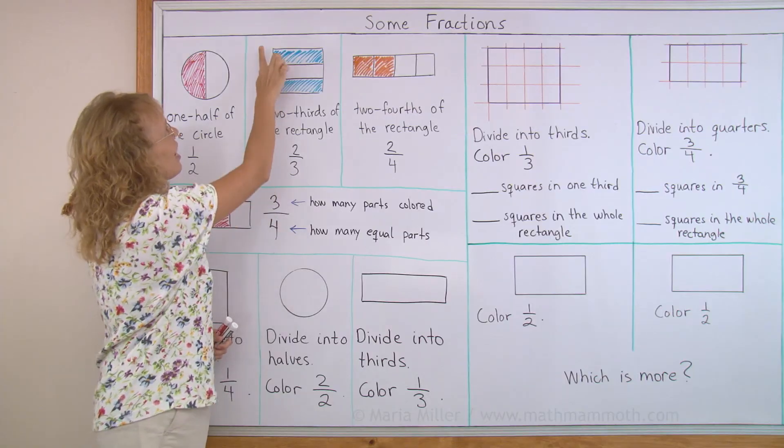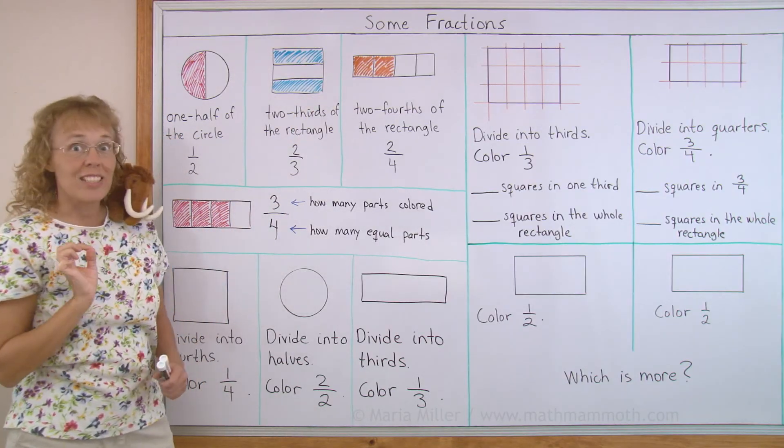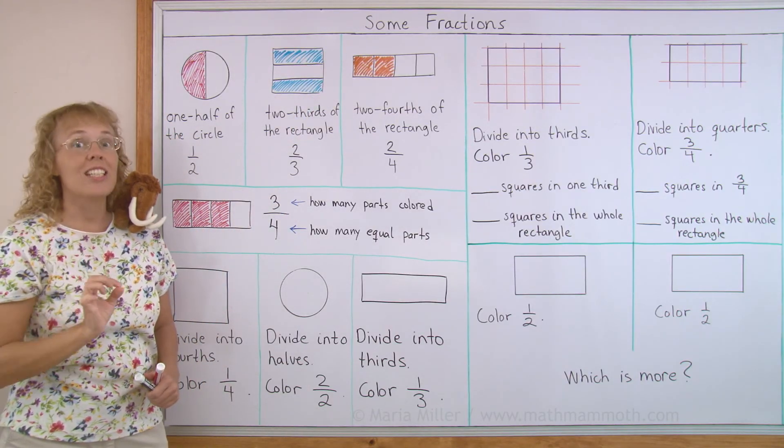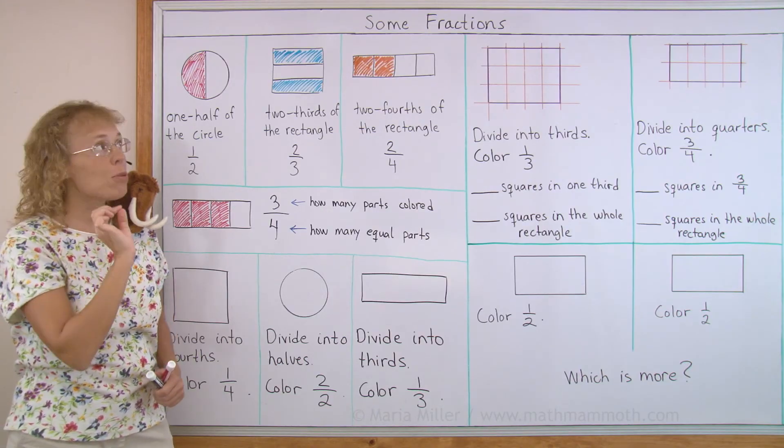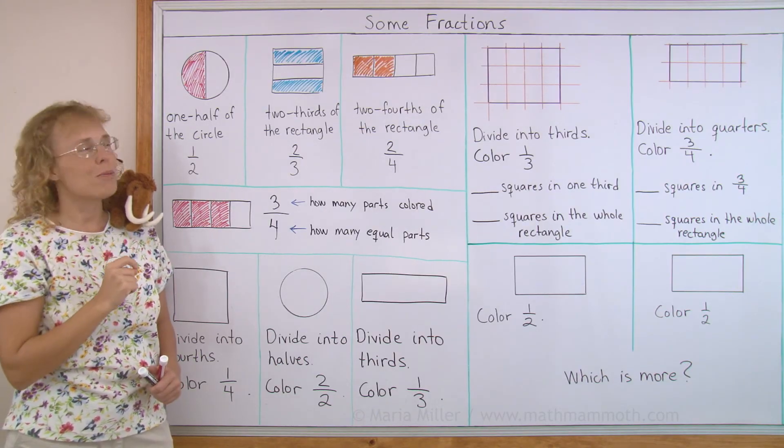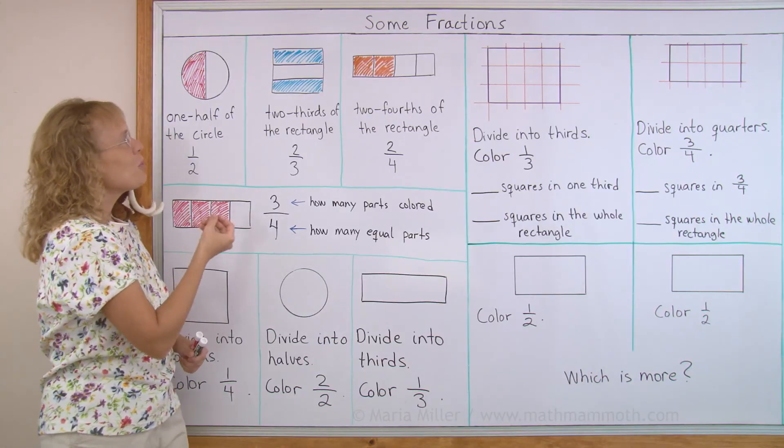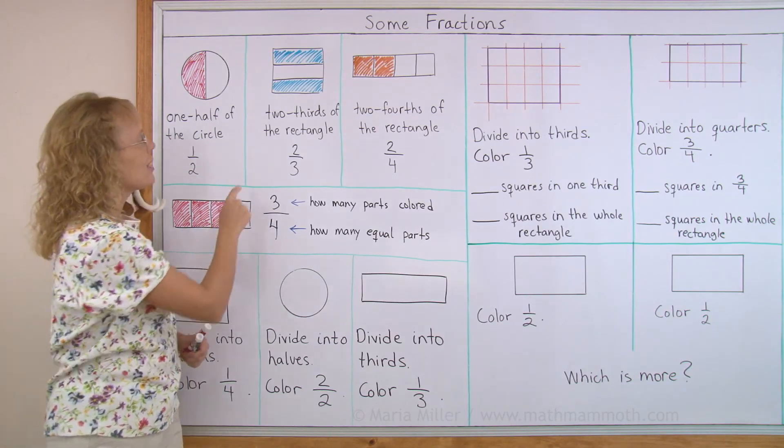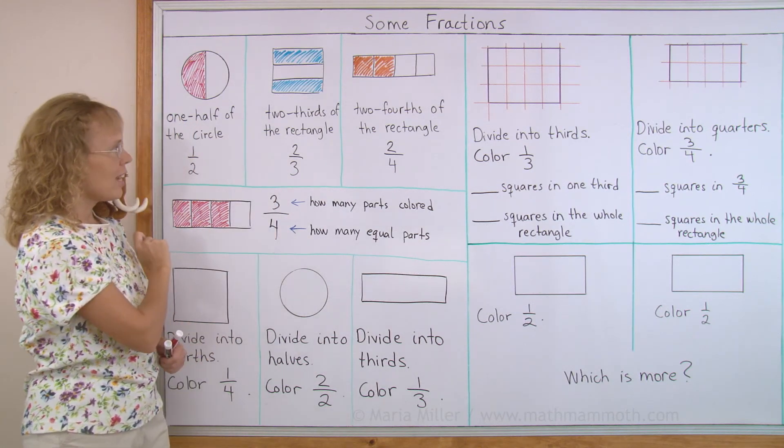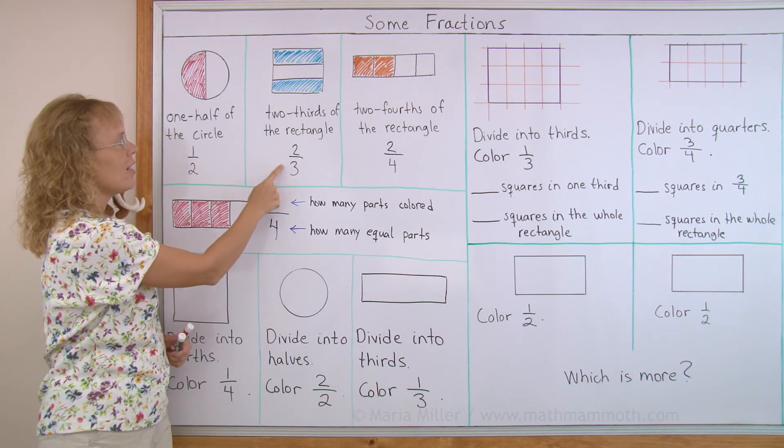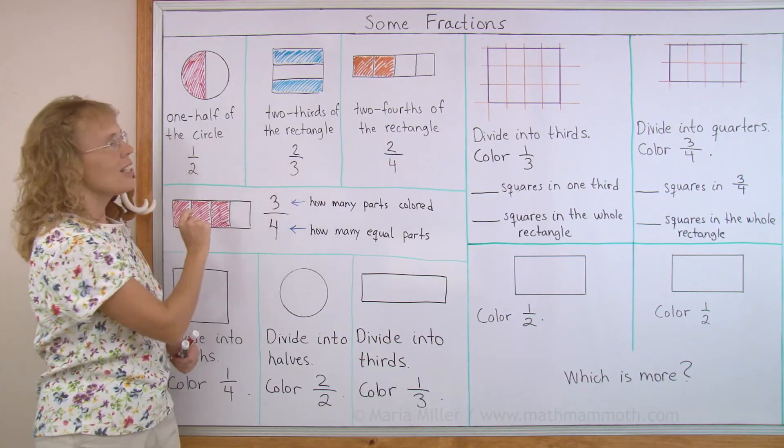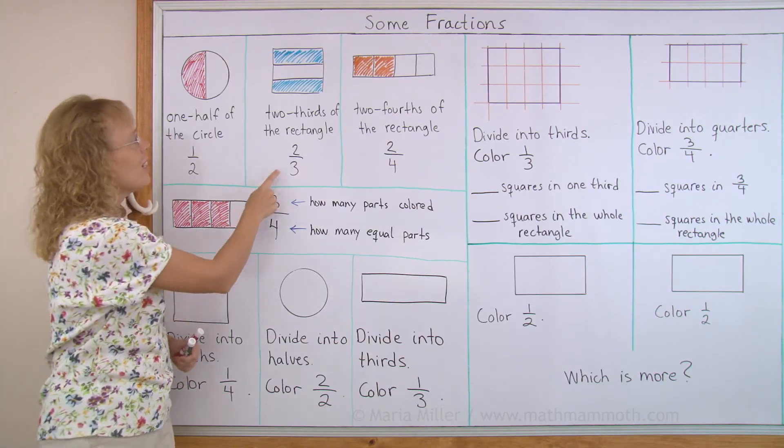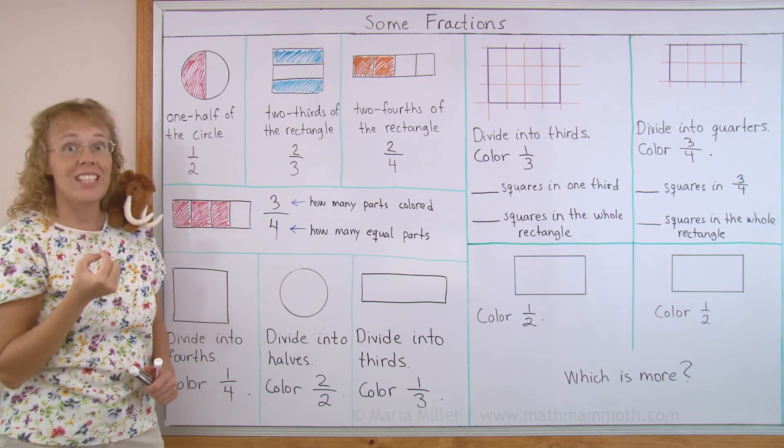Over here I have a rectangle and it was initially divided into three parts, three equal parts, and then I colored the top and bottom part. So two thirds of the rectangle are colored. This is how we write two thirds. Two and then a line and a three. Two meaning that two parts are colored, three meaning that there are three equal parts.